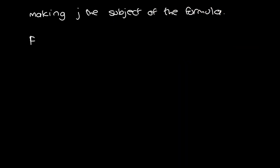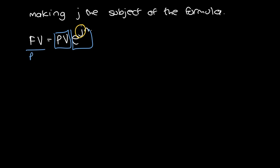For that formula, making j the subject: we start with FV equals PV·e^(jn). To isolate j, we first divide both sides by PV, since PV is multiplied by e^(jn). Dividing through by PV gives us FV over PV equals e^(jn).